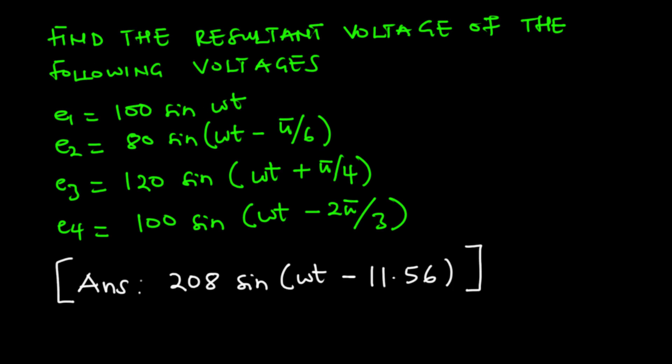So this is a test example. We are to find the resultant voltage of the following voltages: E1 to be 100 sin omega t, E2 to be 80 sin omega t minus pi over 6, E3 to be 120 sin omega t plus pi over 4, and E4 as 100 sin omega t minus 2 pi over 3. And when you solve it, you are supposed to get 208 sin omega t minus 11.56 degrees.